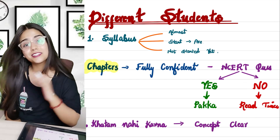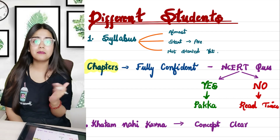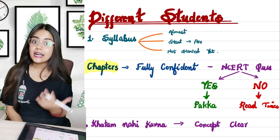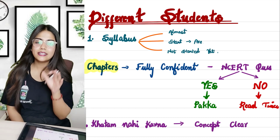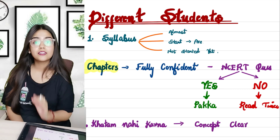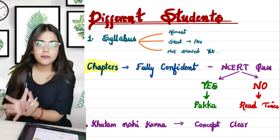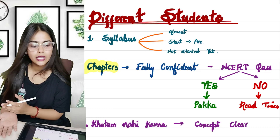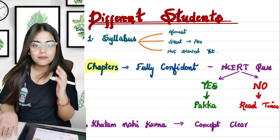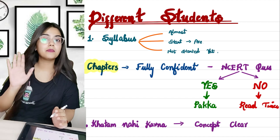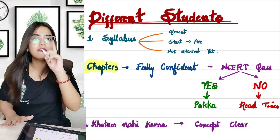We are completing the syllabus and then we will revise the chapters. The biggest mistake most students make is that when they revise 5 or 6 times and still think about re-reading a chapter, don't keep second-guessing. If you feel you are not confident in a chapter, try to read it again.